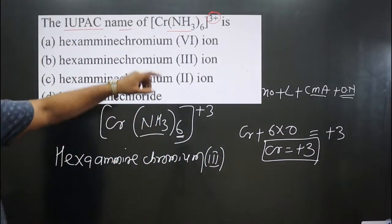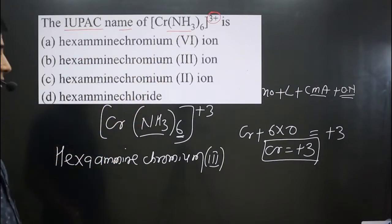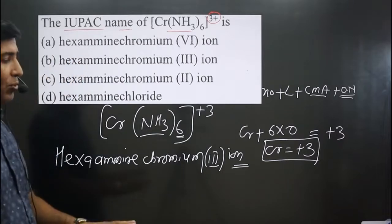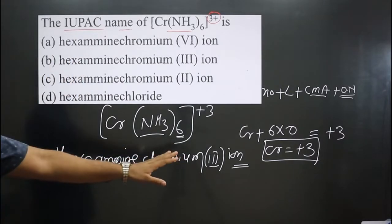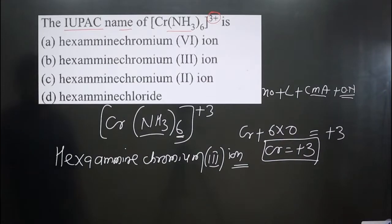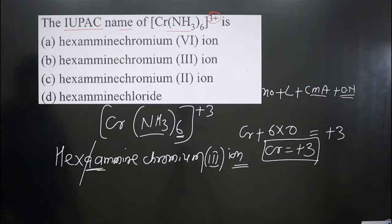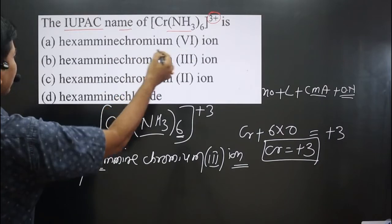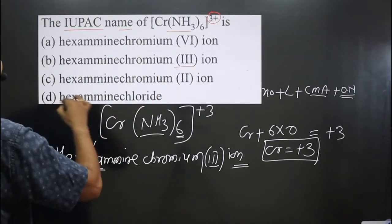Keep in mind it is not a neutral complex — it is cationic. That means we have to add 'ion' at the end. So the name is 'hexaamine chromium(III) ion'. Notice that 'AA' appears twice, so we eliminate one 'A', giving 'hexaamine chromium(III) ion'. You can see this option is there — option B, hexaamine chromium(III) ion, is correct.